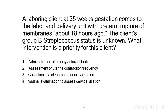A laboring client at 35 weeks gestation comes to the labor and delivery unit with preterm rupture of membranes about 18 hours ago. The client's group B streptococcus status is unknown. What intervention is a priority for this client? 1. Administration of prophylactic antibiotics. 2. Assessment of uterine contraction frequency. 3. Collection of a clean-catch urine specimen. 4. Vaginal examination to assess cervical dilation.